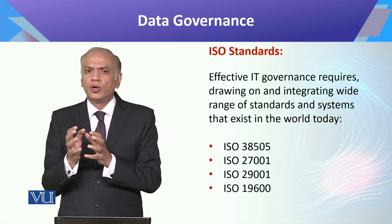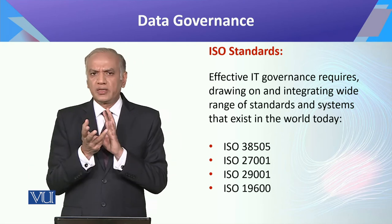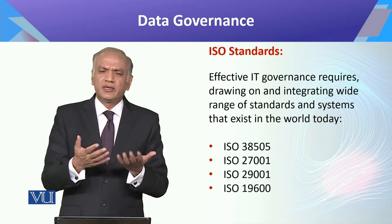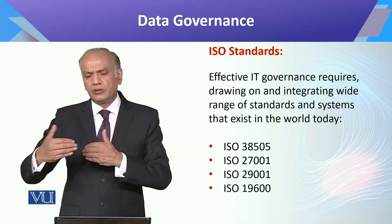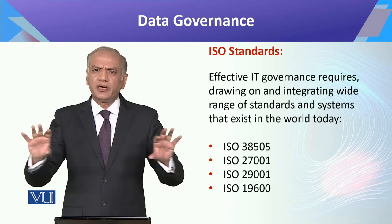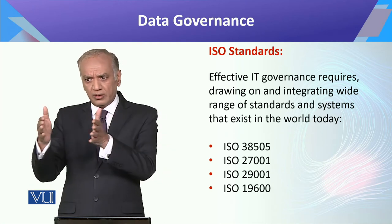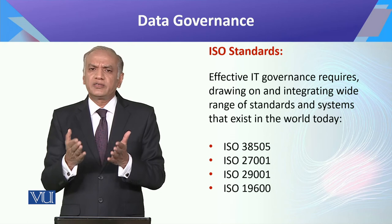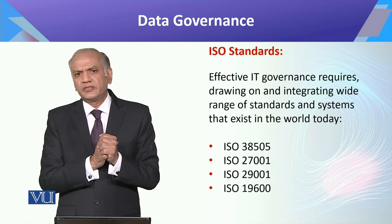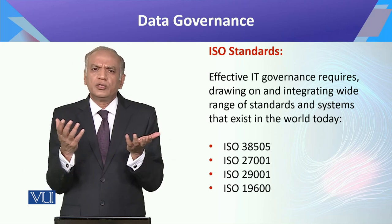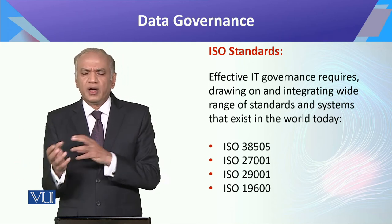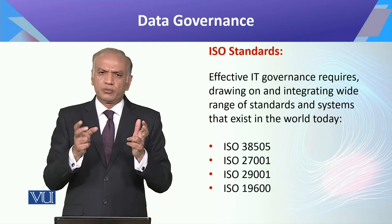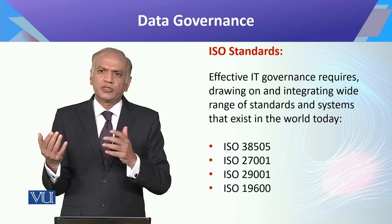What ISO basically did is this: for any area in the world you look at, they have created a standard. Historically there was a Japanese standard, a British standard, an American standard, a German standard — different countries had their own quality control standards. It started with manufacturing but then crept step by step into almost every area. ISO 9000 is the basic quality standard, ISO 14000 is related to the environment, SA 8000 is related to labor laws. In our context, ISO 38000 is about data management, and ISO 27000 is about data security.